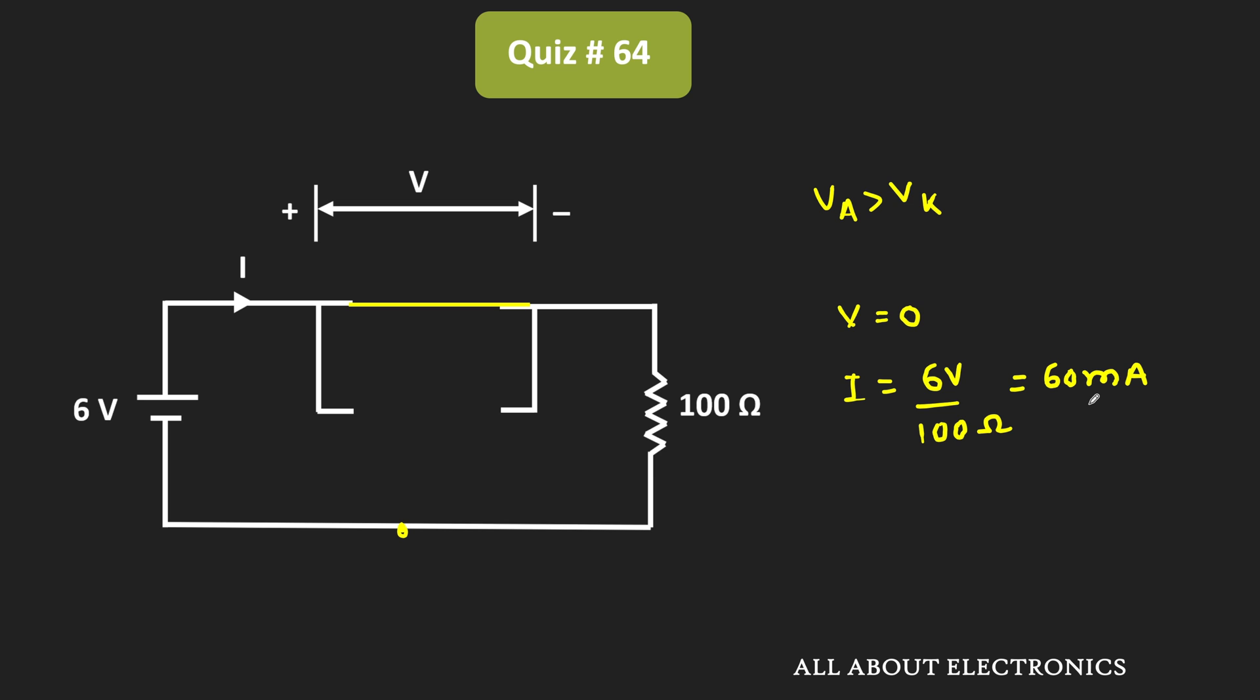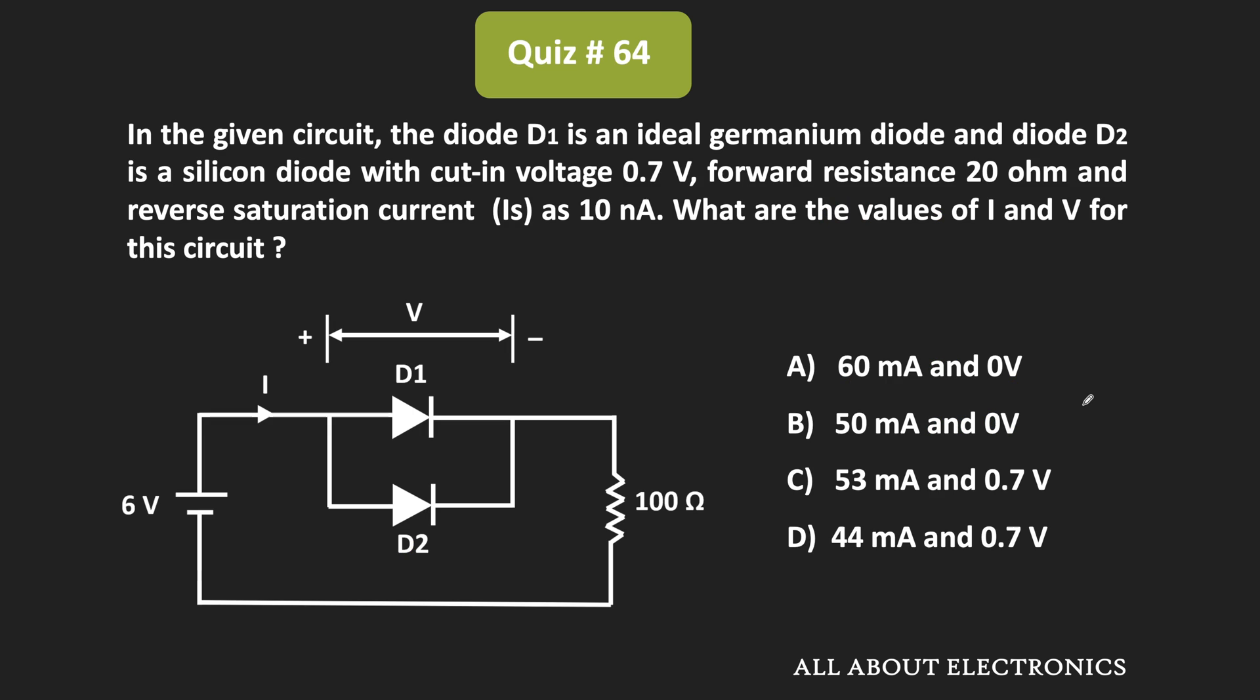So for the given circuit, V equals 0V when current I equals 60mA. Therefore, for the given question, option A is the correct answer.